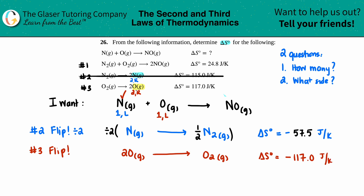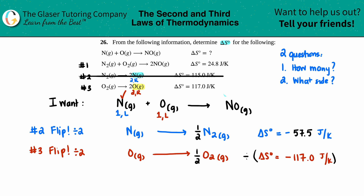Since I have two O's and I only want one, I also divide by two. The coefficient 2 on O becomes 1, and the 1 on O₂ becomes one-half. I then divide ΔS by 2: −117.0 ÷ 2 = −58.5 J/K. Equation three is done — cancel it out.